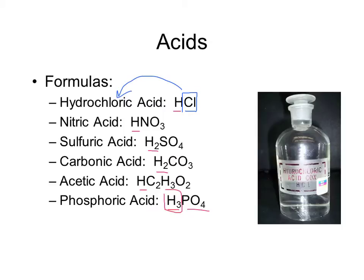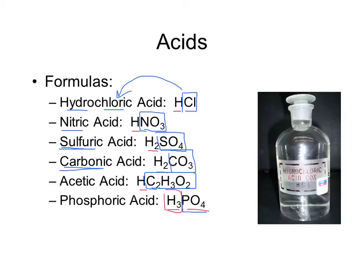Hydrochloric acid: hydro comes from hydrogen, chloric comes from the chlorine after it. The rest of these have polyatomic ions, so we drop the hydro part and name the acid after the polyatomic ion. Nitrate gives us nitric acid; sulfate gives us sulfuric acid; carbonate gives us carbonic acid. Acetic acid — which is what we see in vinegar — and phosphoric acid comes from phosphate.